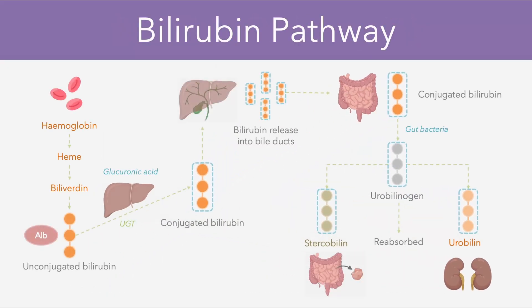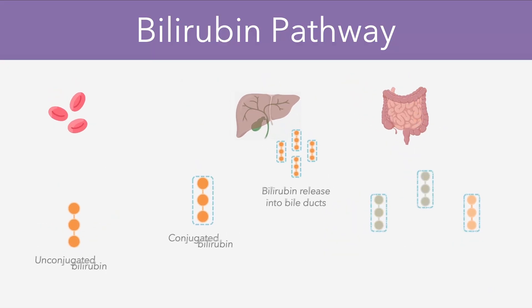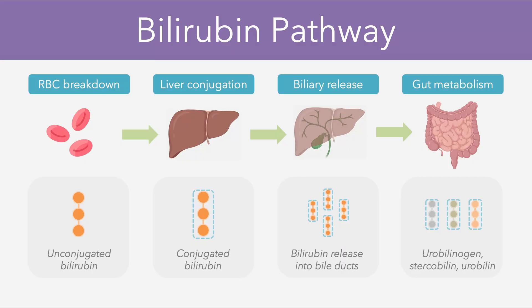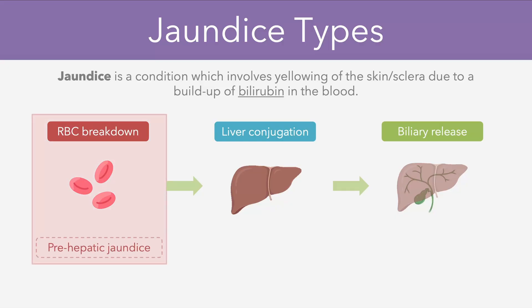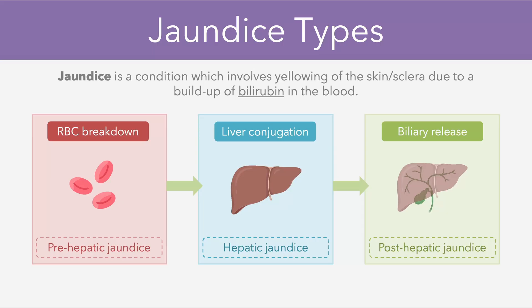Just to show everything in one place, we have a summary diagram of the bilirubin pathway, as well as a slide that shows the key products formed at different stages of the process. Now that we have a good understanding of the bilirubin pathway, we can move on to understanding jaundice itself, where we have an excess of bilirubin in the blood. We typically divide jaundice into different types depending on which part of the pathway is affected: pre-hepatic jaundice involves issues with red blood cell breakdown, hepatic jaundice involves issues with liver conjugation, and post-hepatic jaundice involves problems with biliary release.